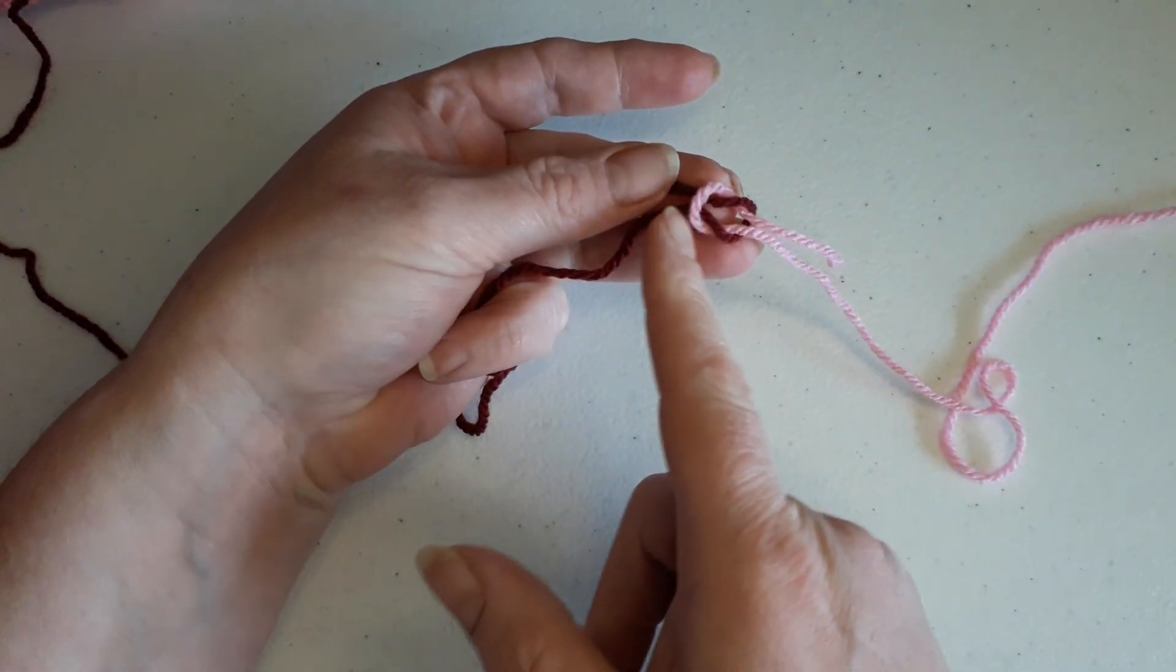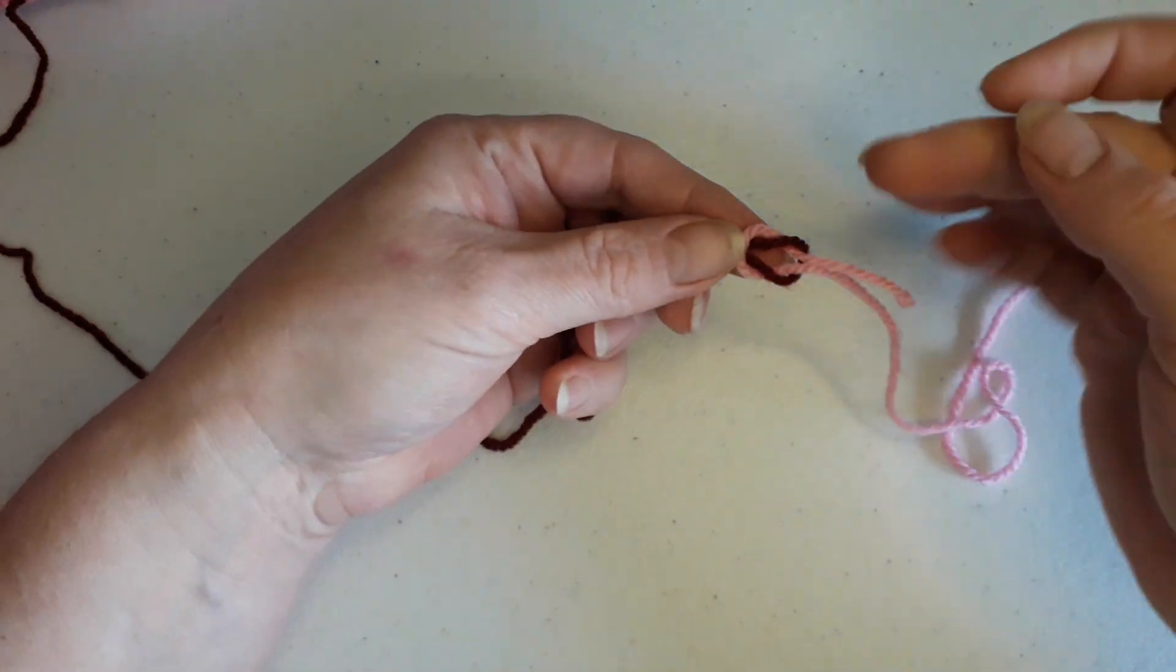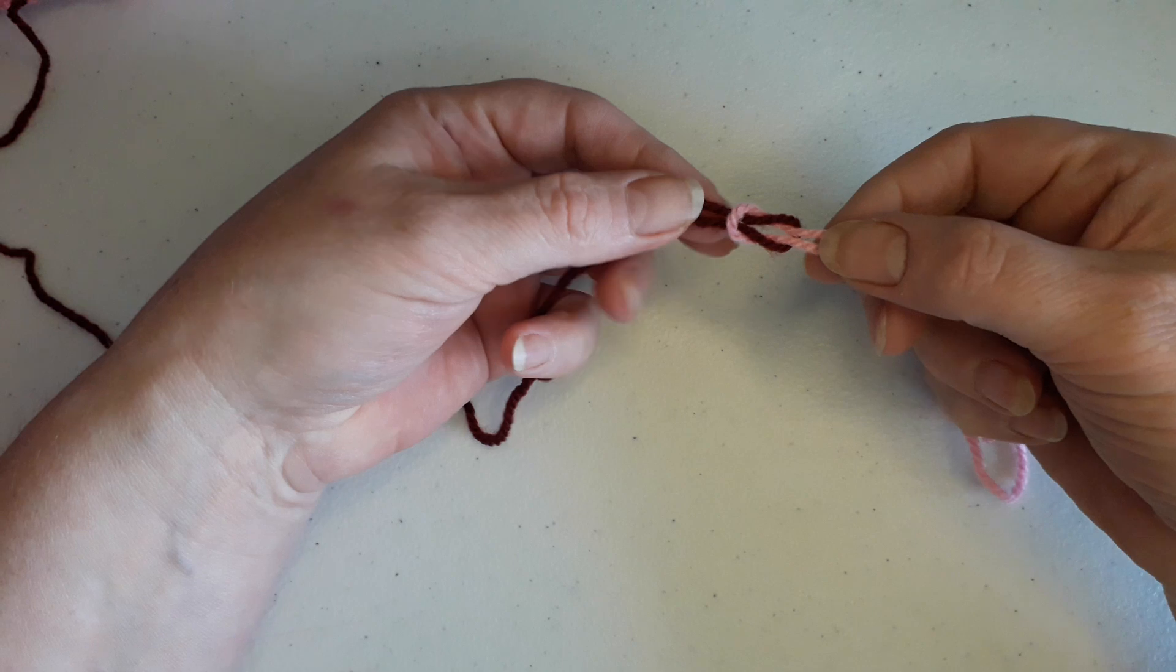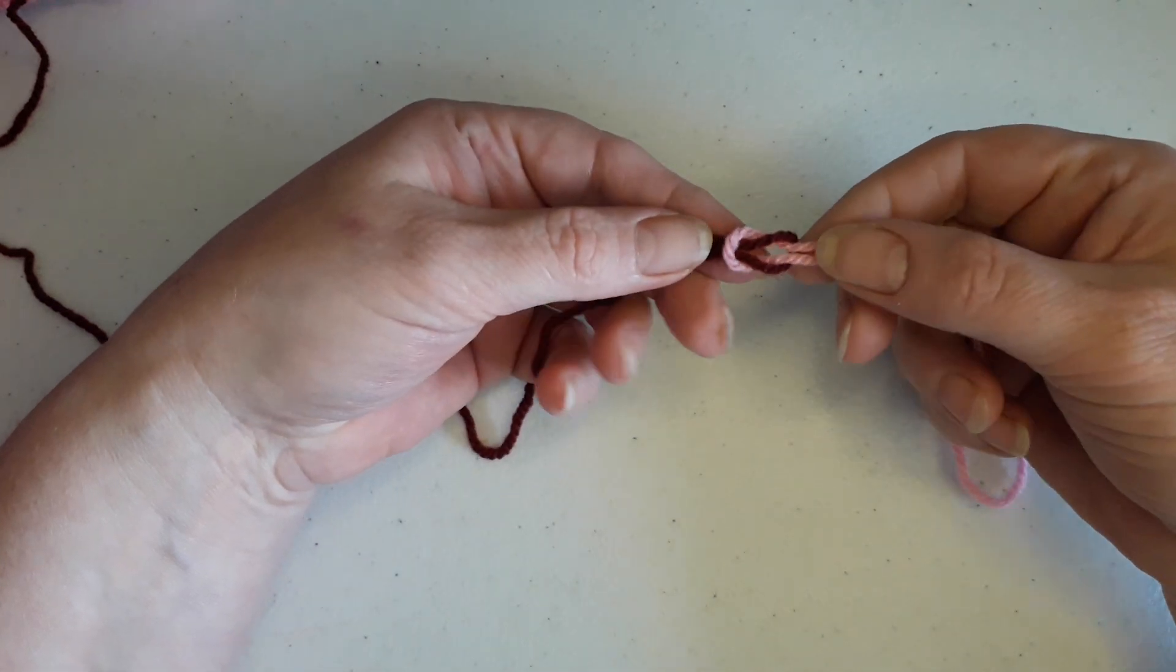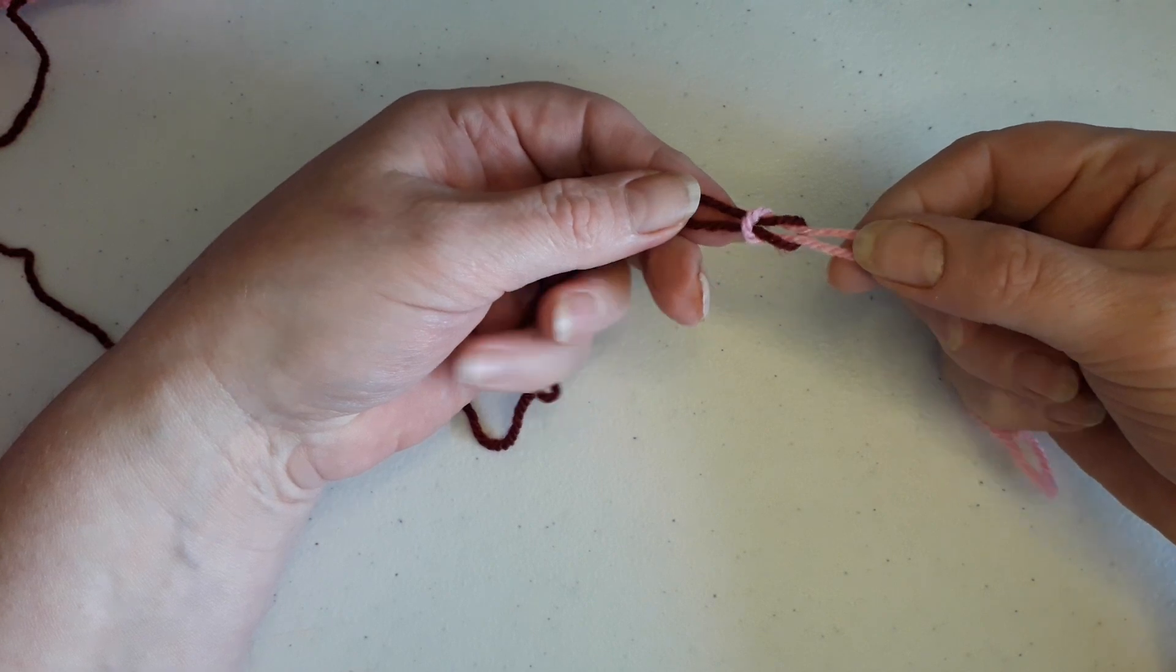You're making a loop in here which goes over, and that other loop actually goes under. So when you see that sequence, that means you've done it right and you can push those.